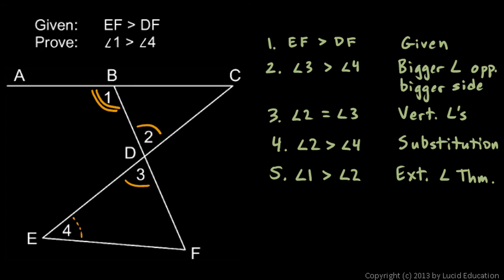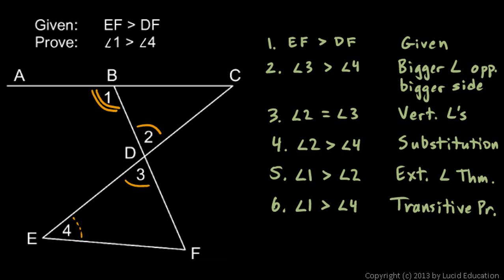I'm trying to prove that angle 1 is bigger than angle 4. I have angle 1 is bigger than angle 2, and angle 2 is bigger than angle 4. So my last step: angle 1 is bigger than angle 4. The reason is the transitive property — or the transitive property of inequality. If angle 1 is bigger than angle 2, and angle 2 is bigger than angle 4, then angle 1 must be bigger than angle 4. And that's what we were trying to prove.